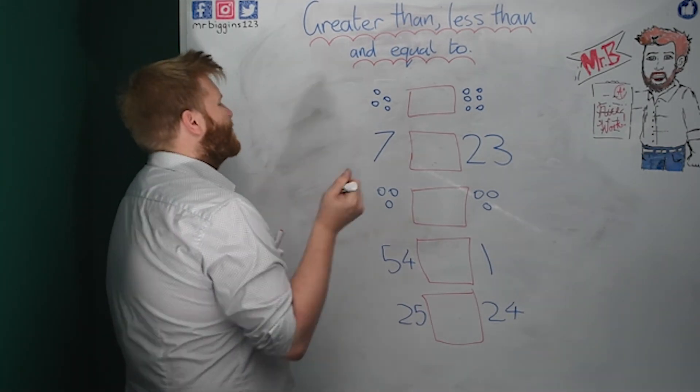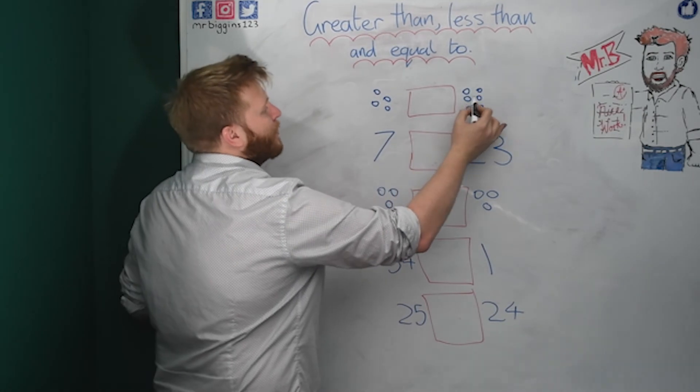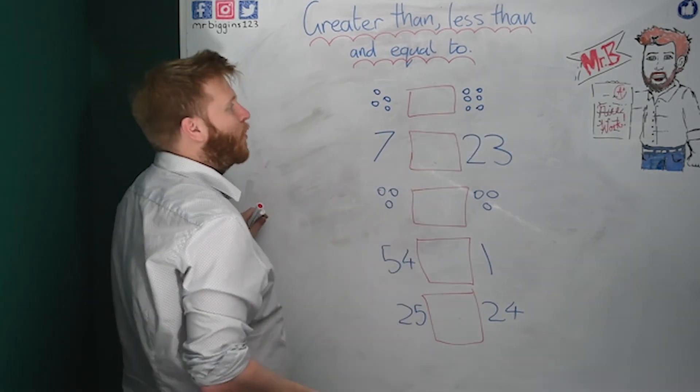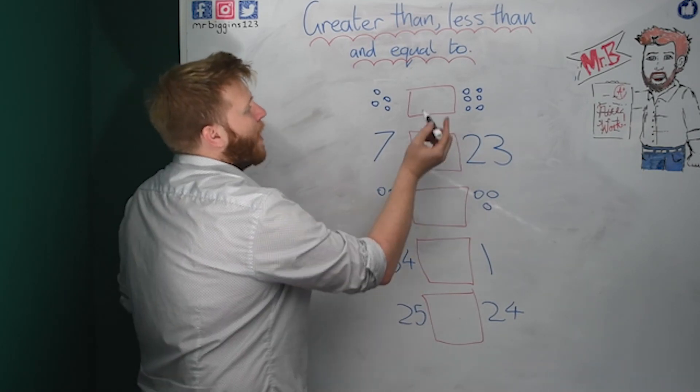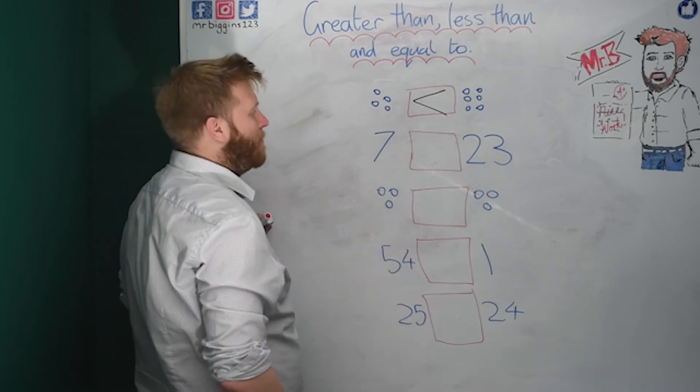So on this one, let's have a little look. We've got one, two, three, four. And we've got one, two, three, four, five, six. So this number has more. It's easy to see when we've got a picture. So we know there's more there. So we would put in this sign. The crocodile is eating the bigger number.